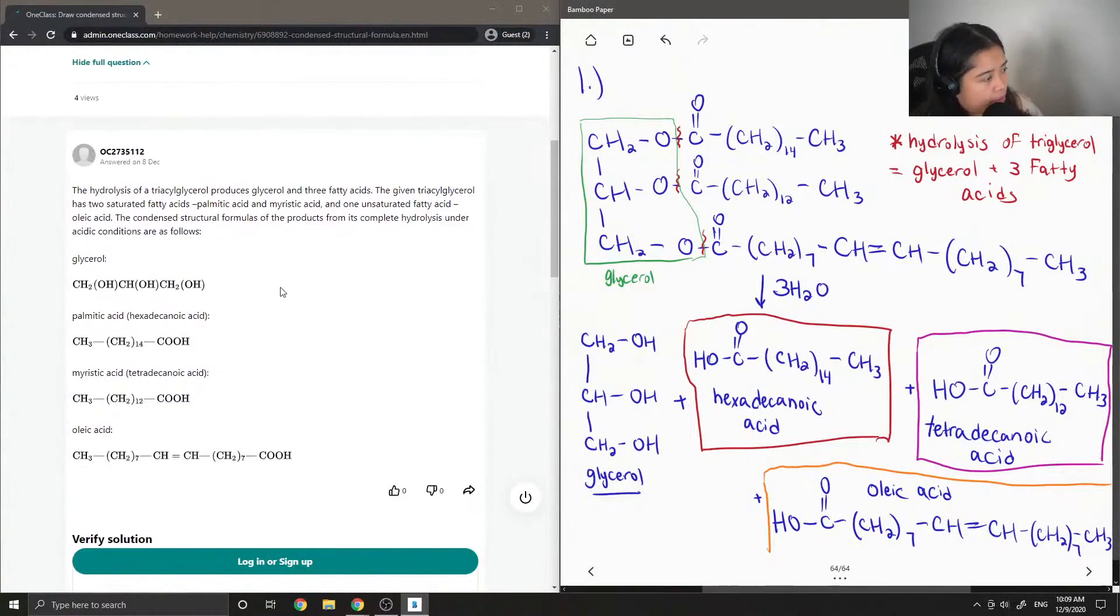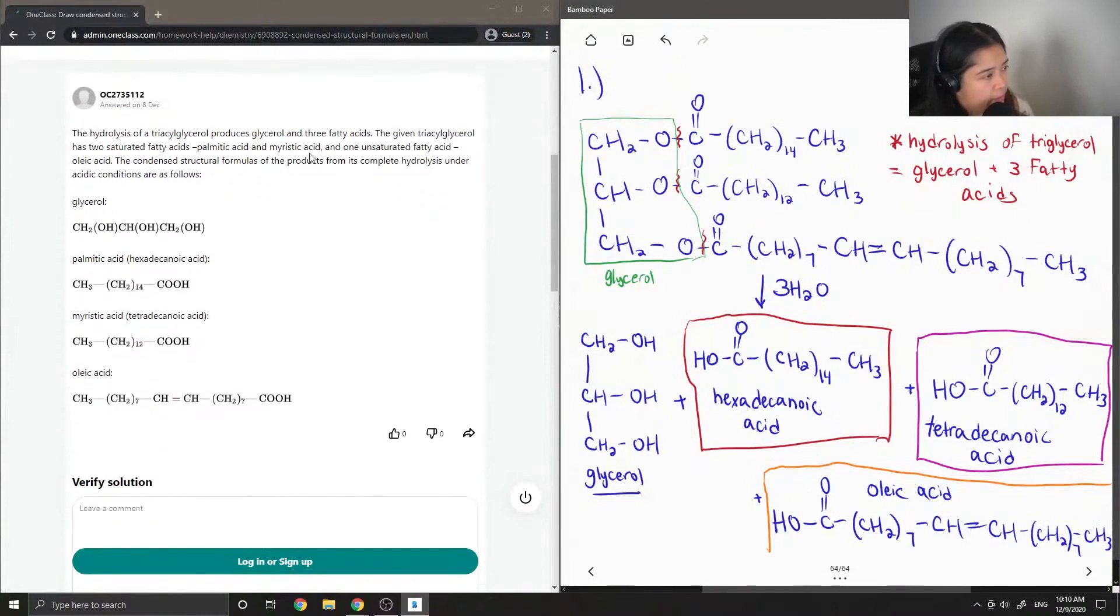Okay, so the tutor said, the hydrolysis of a triacylglycerol produces glycerol and three fatty acids. The given triacylglycerol has two saturated fatty acids, palmitic acid and myristic acid, and one unsaturated fatty acid, oleic acid. The condensed structural formulas of the products from its complete hydrolysis under acidic conditions are as follows.